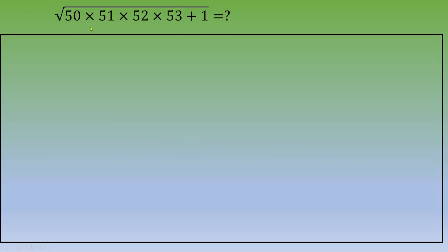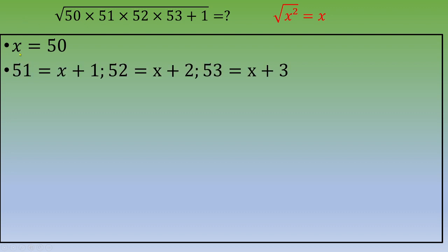Every time you deal with a square root, it's always interesting when the quantity below the root is a perfect square. For example, square root of x squared is simply x. The trick we saw in a previous video is to spot the smallest number between 50, 51, 52, and 53 — which is 50 — and set x equal to 50. Then you express the other numbers as functions of x: 51 is x+1, 52 is x+2, and 53 is x+3.